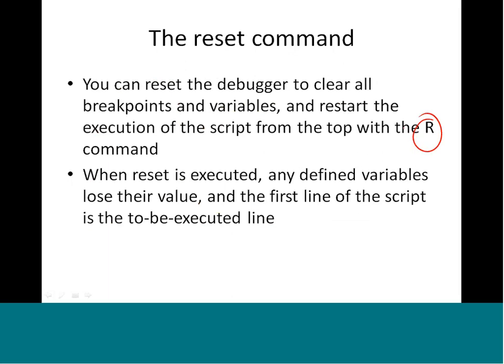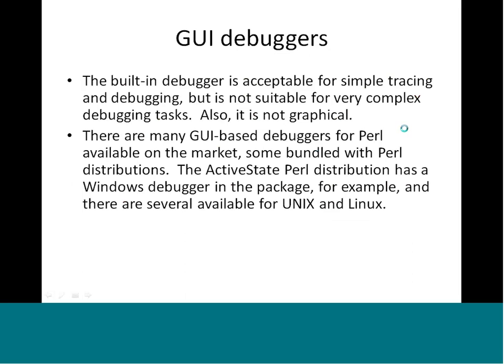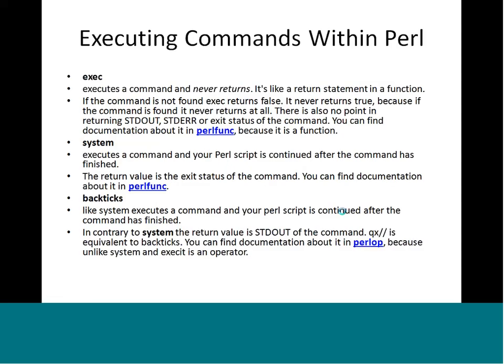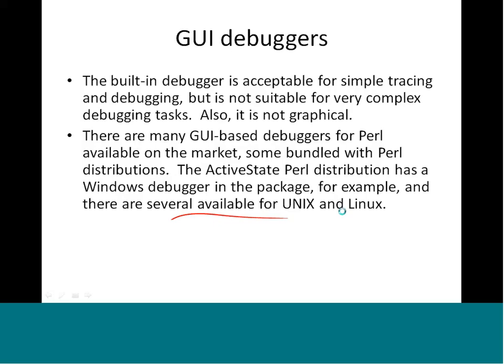The built-in debugger is acceptable for simple tracing and debugging, but it is not suitable for very complex debugging and it is not graphical. There are many GUI-based debuggers available - some bundled with Perl distributions and some standalone. For example, the ActiveState Perl distribution includes a Windows debugger, and there are several available for Unix and Linux. That pretty much concludes this lecture and we will continue from this point in the next one.